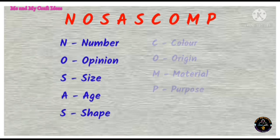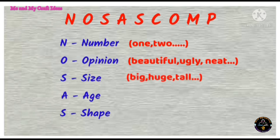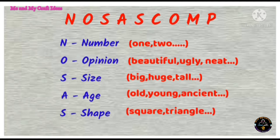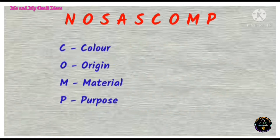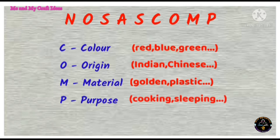Let's see some examples for the adjectives. Number: one, two, three, four. Opinion: beautiful, ugly, neat. Size: big, huge, tall. Age: old, young, ancient, antic. Shape: square, triangle, rectangle. Color: red, blue, green, yellow. Origin: Indian, Chinese, American. Material: golden, plastic. Purpose: walking, sleeping, cooking, sports.